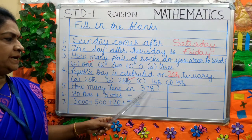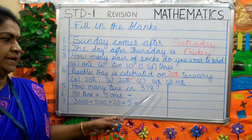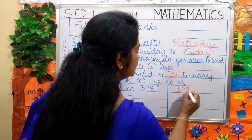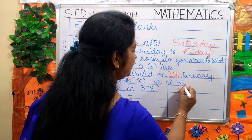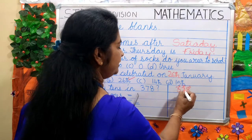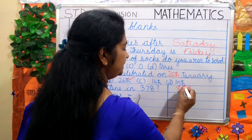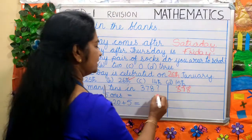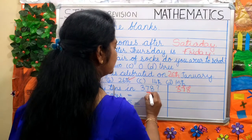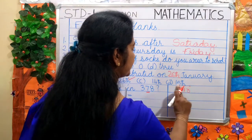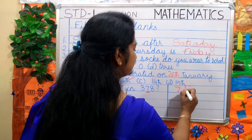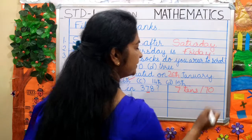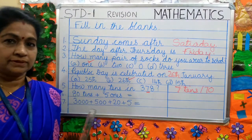Next question: How many 10s in 378? In 378, we have 1s, 10s and 100s. The digit 7 is under the 10s place. So there will be 7 tens, or 70.